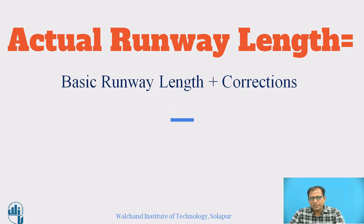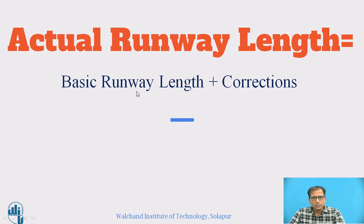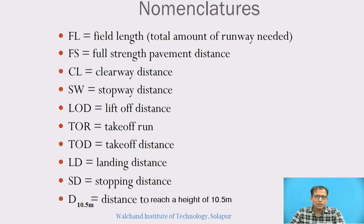As already discussed in the previous session, the actual runway length includes the basic runway length plus corrections — elevation correction, temperature correction, and gradient correction. Before we apply the corrections, we need to find out the basic runway length. These are the notations we are going to use for deriving the basic runway length.